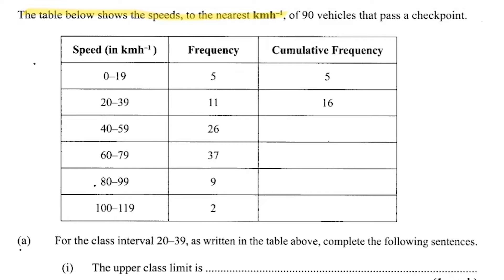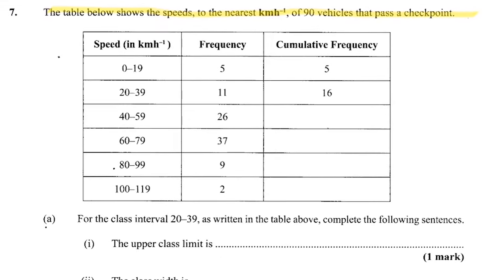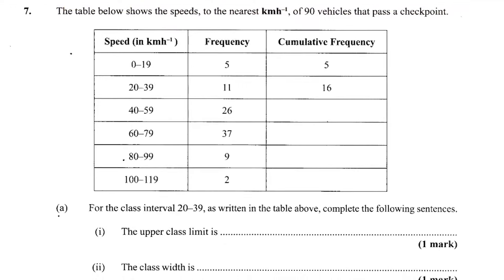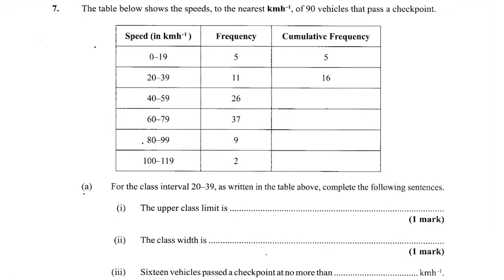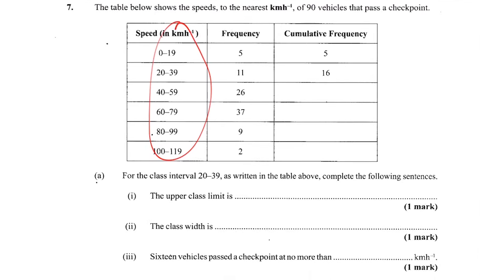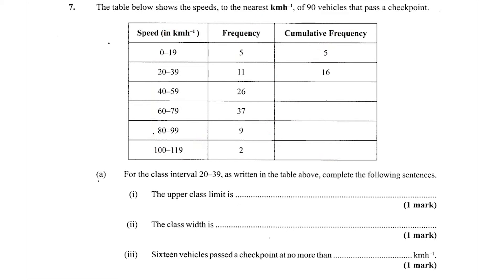The table below shows the speeds to the next kilometers per hour of 90 vehicles that pass a checkpoint. So we have the speed going down here, we have the frequency and then we have our cumulative frequency there. I guess we have to finish off that table.